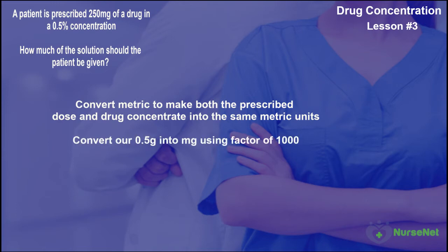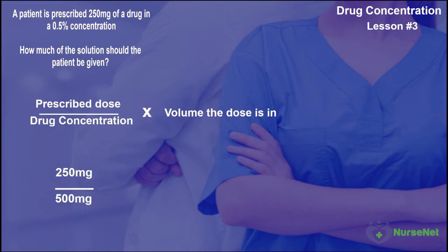We multiply 0.5 grams of concentrate by 1000 to give us 500 milligrams. Now we can work out the calculation: 250 milligrams prescribed dosage divided by 500 milligrams of concentrate gives us 0.5. 0.5 multiplied by the volume the concentrate comes in, which is 100 milliliters, gives us 50 milliliters of solution.